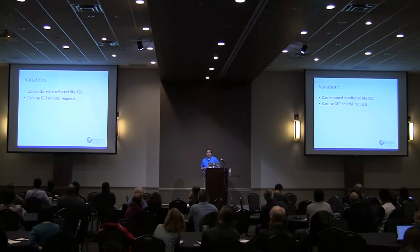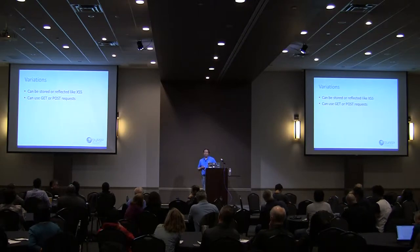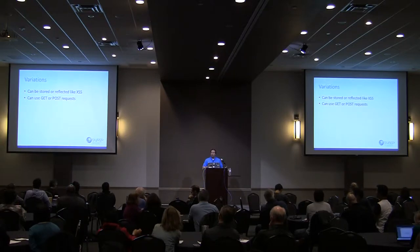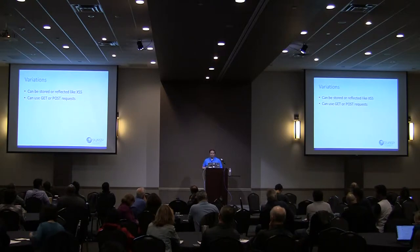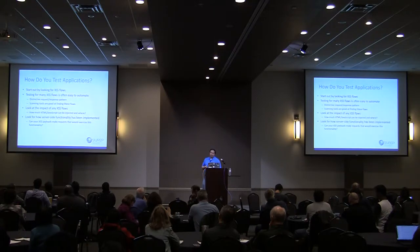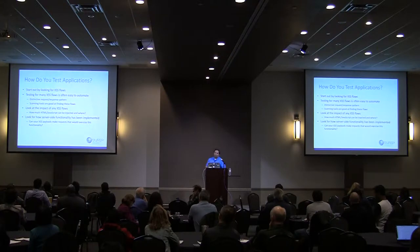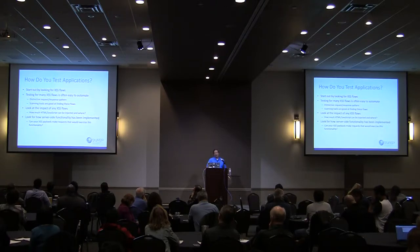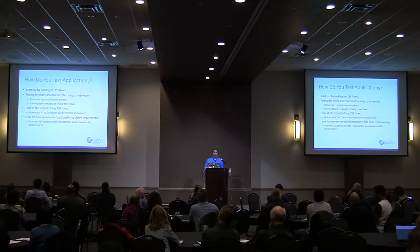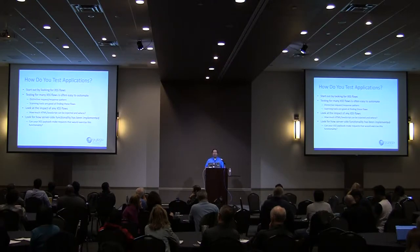Just like cross-site scripting, we have a couple of variations. We can have stored cross-site request forgery or reflected cross-site request forgery, depending on whether the data is stored in the database or is part of a parameter. We can also have GET or POST requests. For testing, we start by looking for cross-site scripting flaws. Once we find them, it's easy to automate the request-response pattern — we have tools for that. We look at the impact: how much HTML and JavaScript can be injected, and where? What's the context and domain? Then we look at how server-side functionality is implemented. Can our cross-site scripting payload make requests that exercise that functionality — call it an API or something like that?